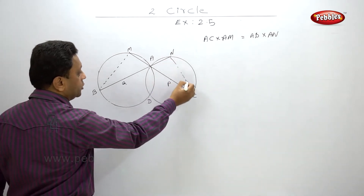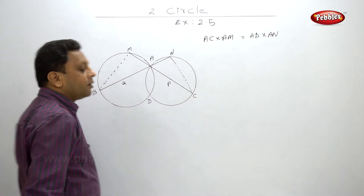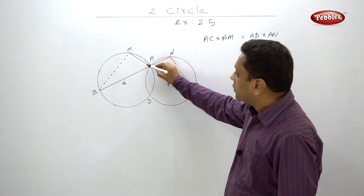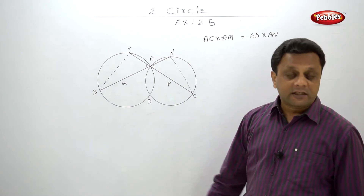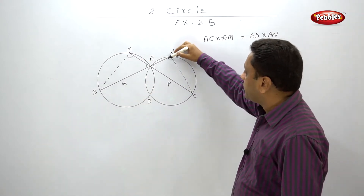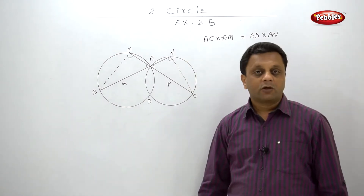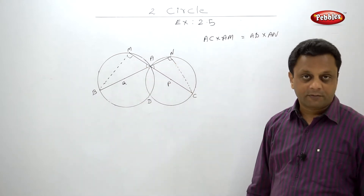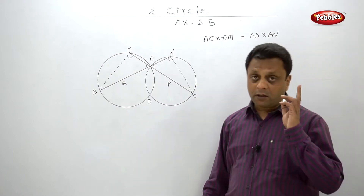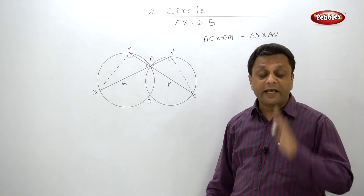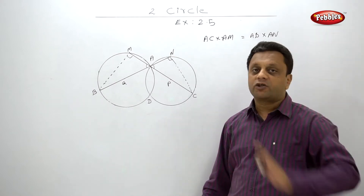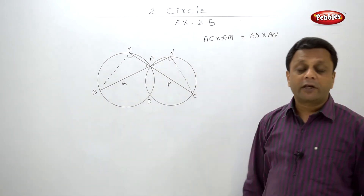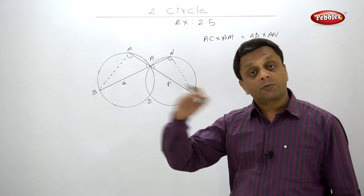This is the diameter and this is any point on the circumference of the circle, so I will join this line. Now consider these two triangles. These are opposite angles; angle inscribed in a semicircle is 90 degrees, and here also inscribed in semicircle is 90 degrees. By the AA test of similarity, these two triangles are similar. It is very important which names you give to the triangles — the ratios must be proper corresponding ratios.